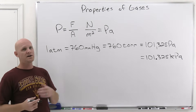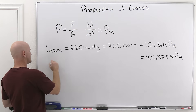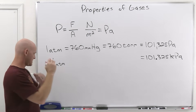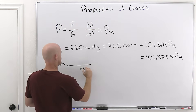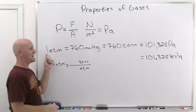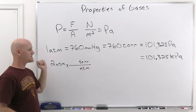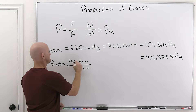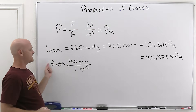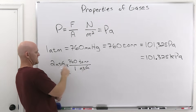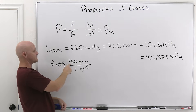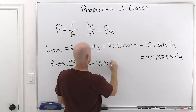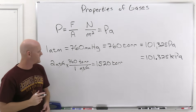Let's look at a typical conversion. Say we have 2 atmospheres and want to convert to torr. We put atmospheres on the bottom and torr on top, using the equivalence that 1 atmosphere equals 760 torr. Multiplying across: 2 times 760 equals 1,520 torr.